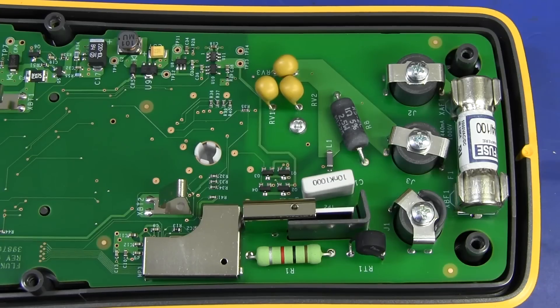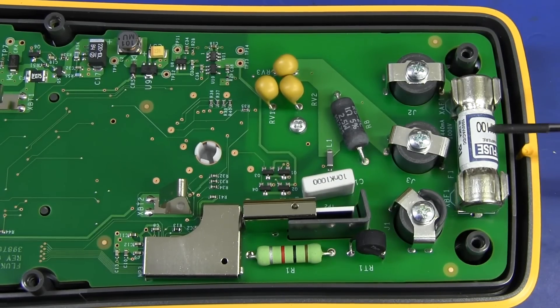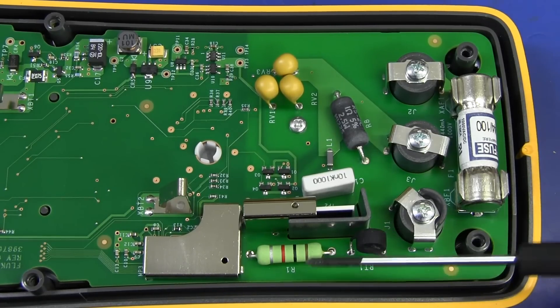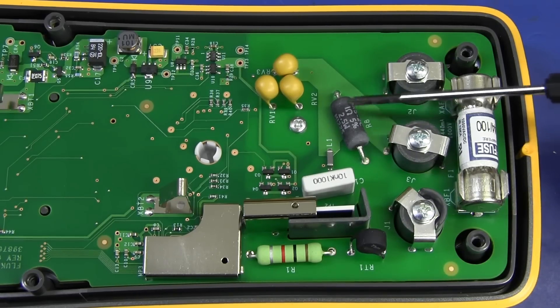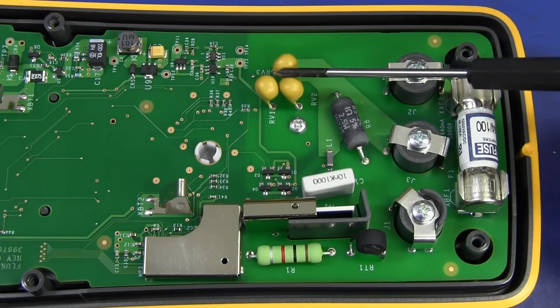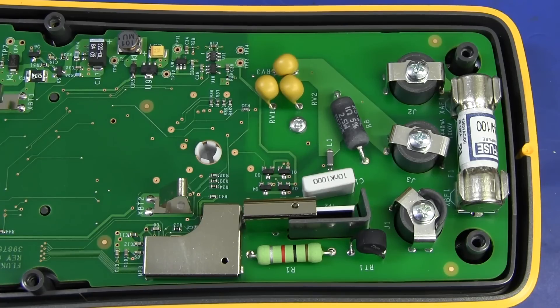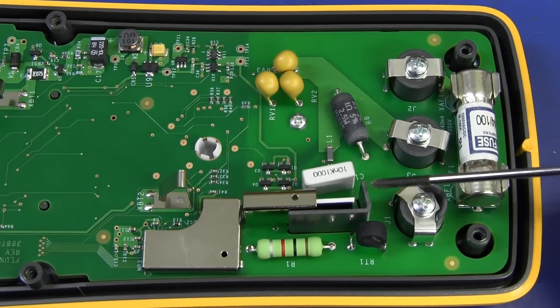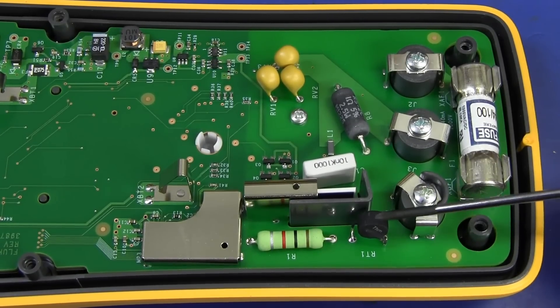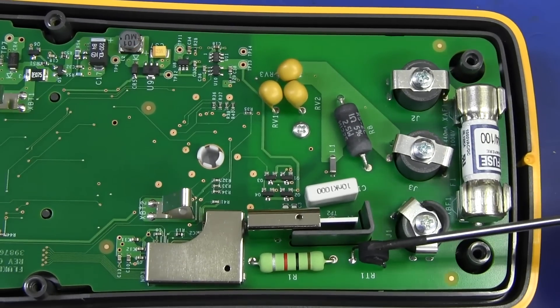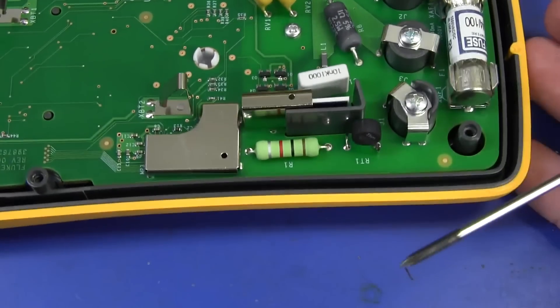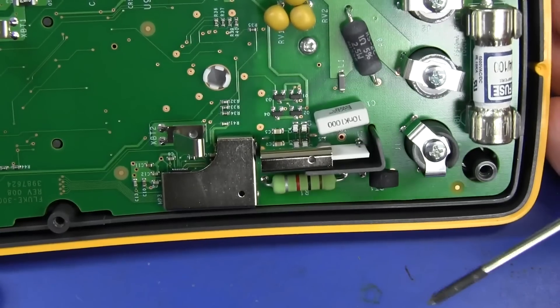So the input front end here isn't very exciting at all. Yeah, we've got the usual 440 milliamp HRC fuse here. We've got the input thermistor. We've got the input protection resistor. We've got our fixed current shunt there, because you don't need a 10 amp and multiple current shunts to be switched into place. And we've got our three MOVs there, and that's all there is to it. It's pretty boring, actually.